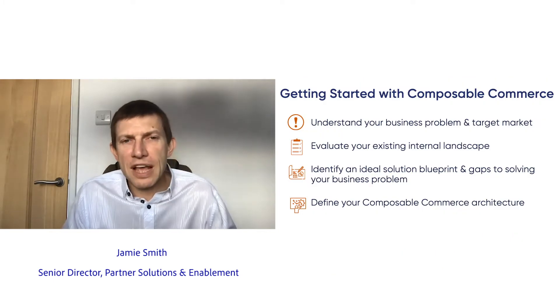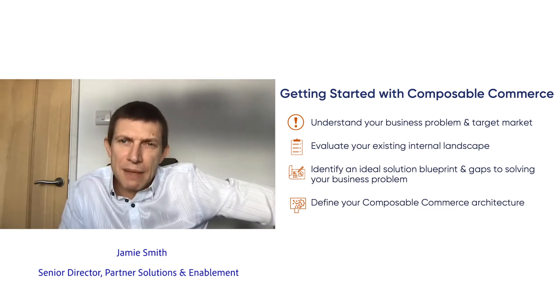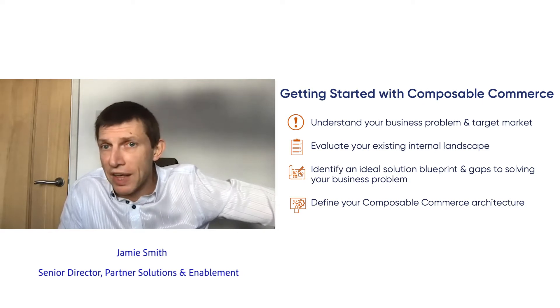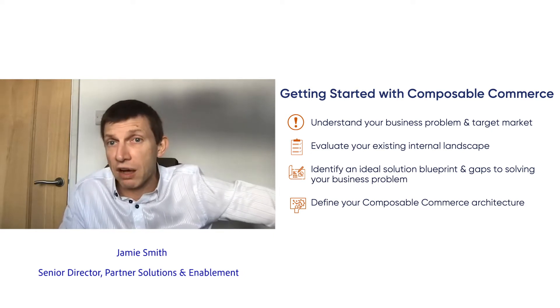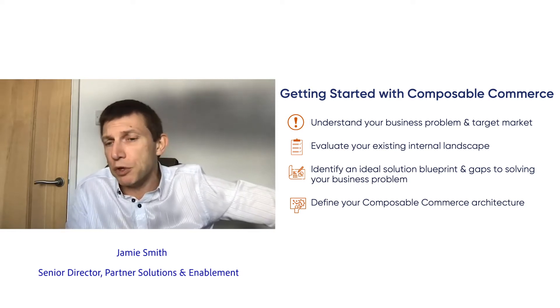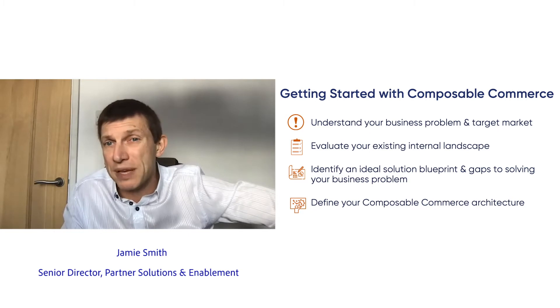If you're tuning in, we're going to share four steps that make getting started with Composable Commerce a no-brainer. Jamie, what are those four steps? In order to get started on our Composable Commerce journey, we need to consider these key steps: understanding what the key business problem is and who the target market is for that problem; evaluating the existing internal landscape, which is very critical when looking at architecture in the long run; identifying the ideal solution blueprint and the gaps to solving the business problems; and finally, defining your Composable Commerce architecture and seeing what pieces you need in the puzzle to make you successful. Now we have our roadmap. Let's break it down for our audience so they can really set this up on their own. How can the team define their business problem and target market? What should they ask themselves?